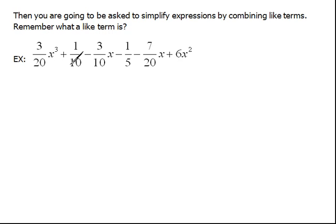Now, in order to combine like terms, we have to look and see, okay, what kinds of things can I put together? Well, here I have an x cubed and then I have just a plain number, an x, a plain number, an x, and an x squared.